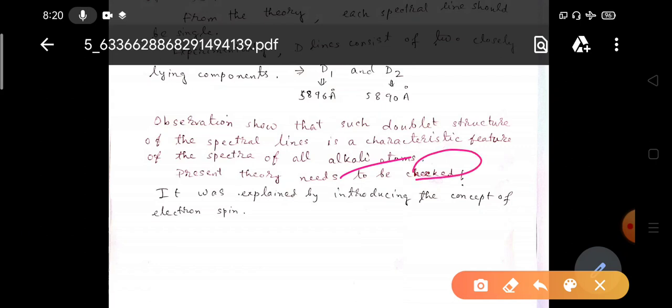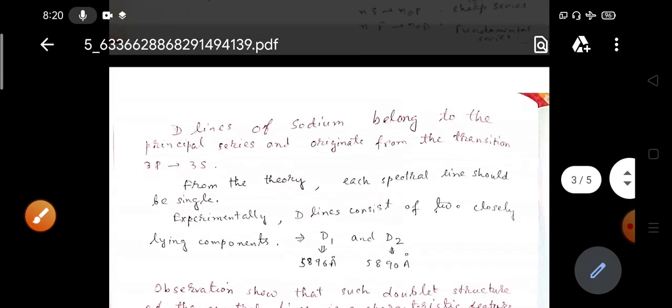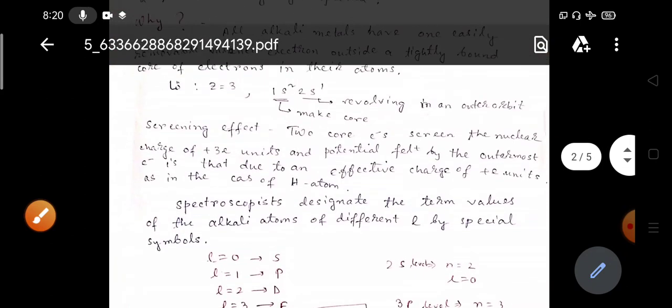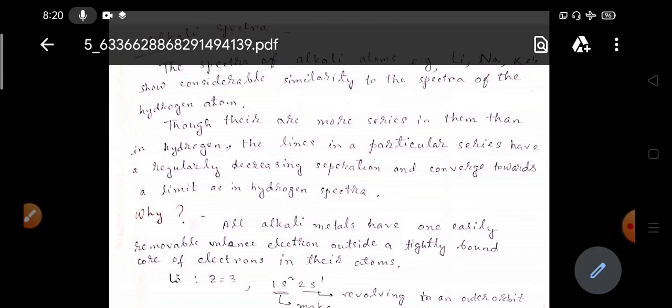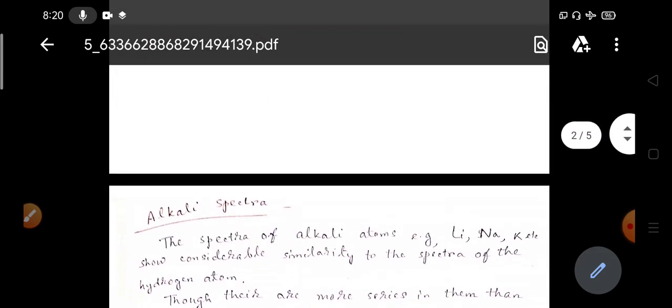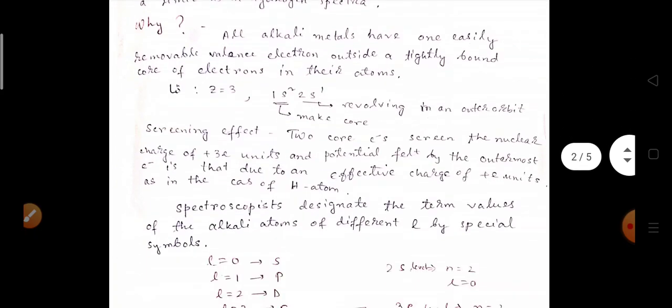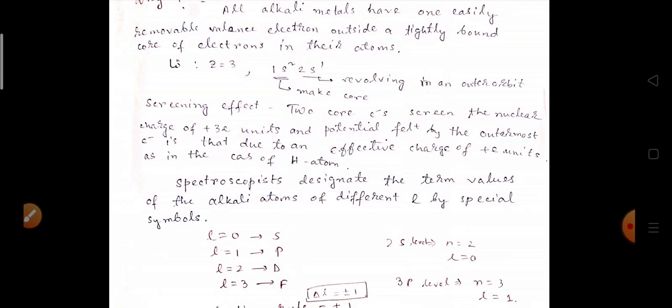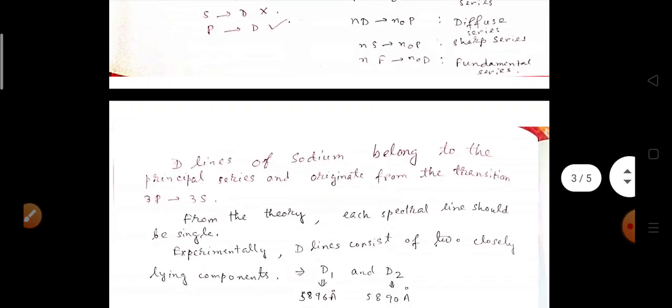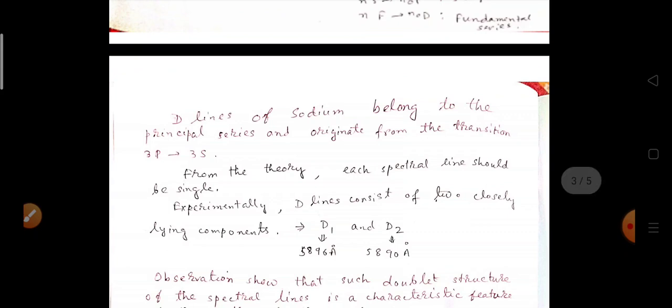Now it was explained by introducing the concept of electron spin. Today I shall discuss about the spectra of alkali atoms and we understand what are the series allowed for alkali spectra and what are the problems with the Bohr-Sommerfeld theory. We need some more theory, extra quantization rule to understand the spectral lines. In the next lecture, I will tell about the vector atom model and the normal Zeeman effect.